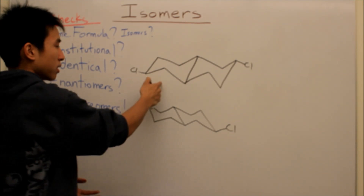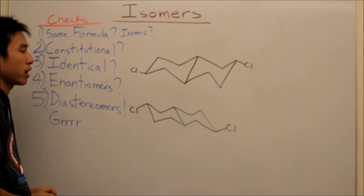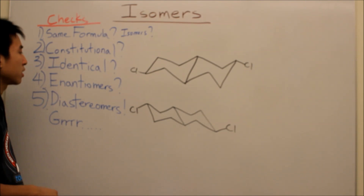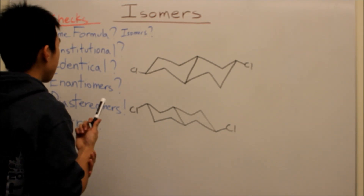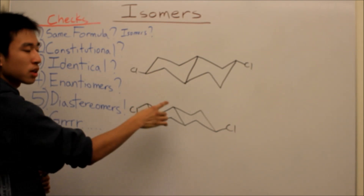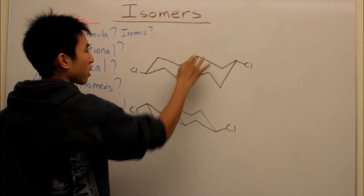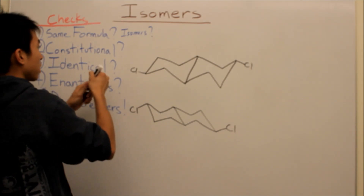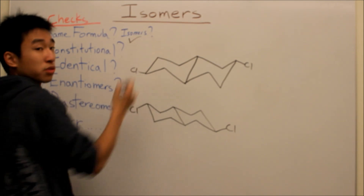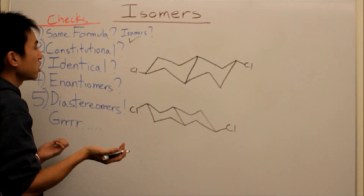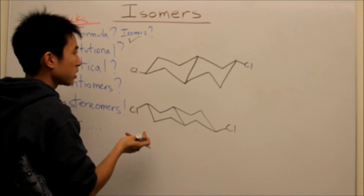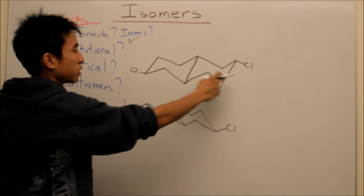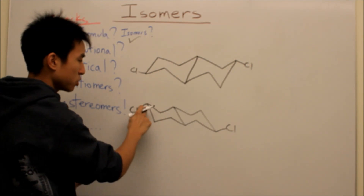Now let's look at these two molecules here. Same formula check — they have the same number of carbons and the same number of chlorines, so they have the same formula. That means they are isomers. Are they constitutionally different? Not really, because the chlorines are attached to the tip here and the chlorines are attached to the tip here, and the same is true for the other positions.